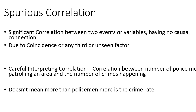One needs to be very careful while interpreting this sort of correlation, or for that matter any correlation, because any correlation could be spurious in nature. One needs to check how well it intuitively makes sense given the problem being solved. For example, the correlation between the number of policemen patrolling an area and the number of crimes happening is quite significant, but that doesn't mean that increasing the number of policemen will cause the crime rate to go up — it's coincidental. Finding and identifying spurious correlations is an important step while doing exploratory data analysis, statistical modeling, or data science modeling.